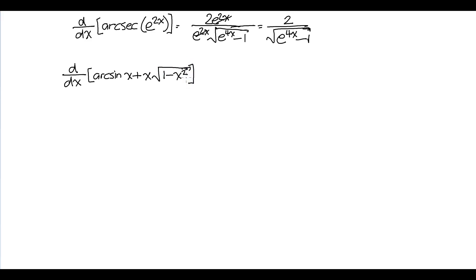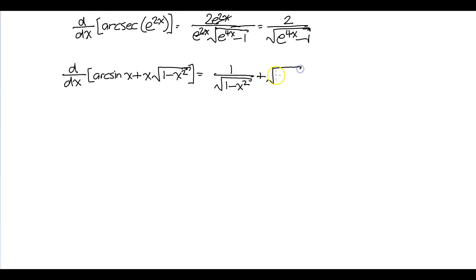How do you start this? The derivative of arc sine of x is 1 over the square root of 1 minus x squared. We should use the product rule here, so it will be f prime — that's 1 — times g, which is the square root of 1 minus x squared, plus g prime.